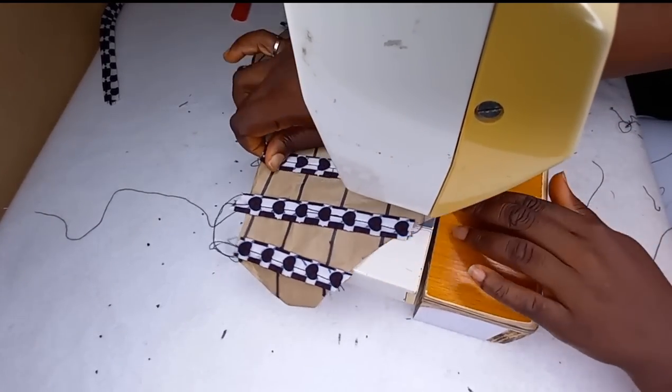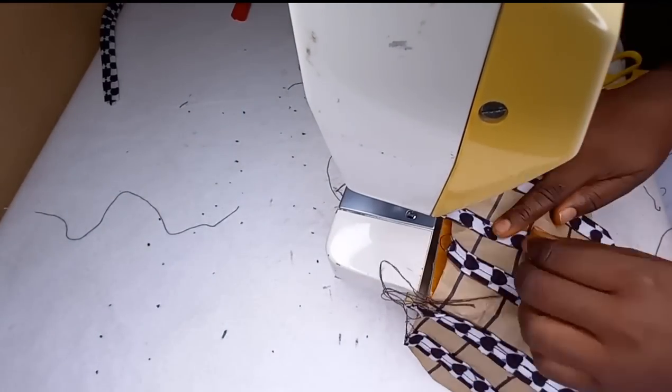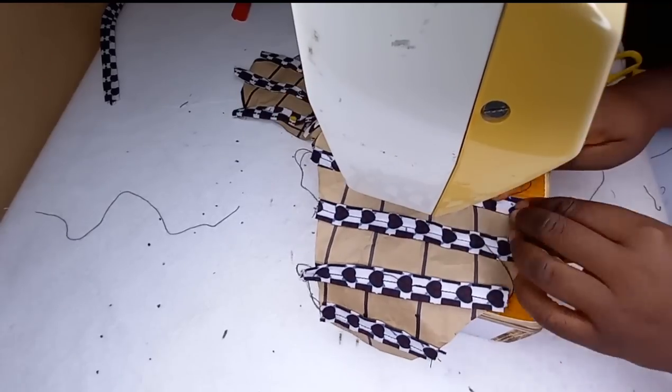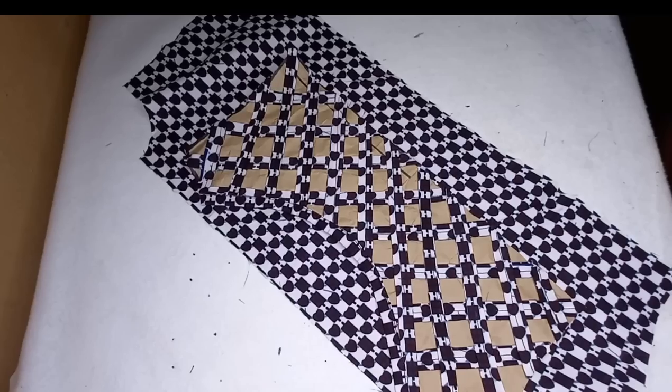So guys here on the sewing machine I've placed my straps on the lines I made and I'm sewing them together. So you have to sew with one line first before crossing your straps over the other to create the design.